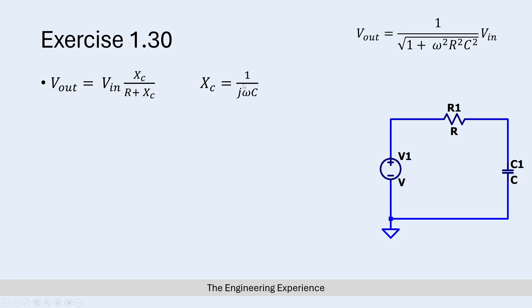Obviously you have the -j over ωC as well from the book. Now if we plug in the equation for the reactance of the capacitor, basically 1 over jωC, into this equation...